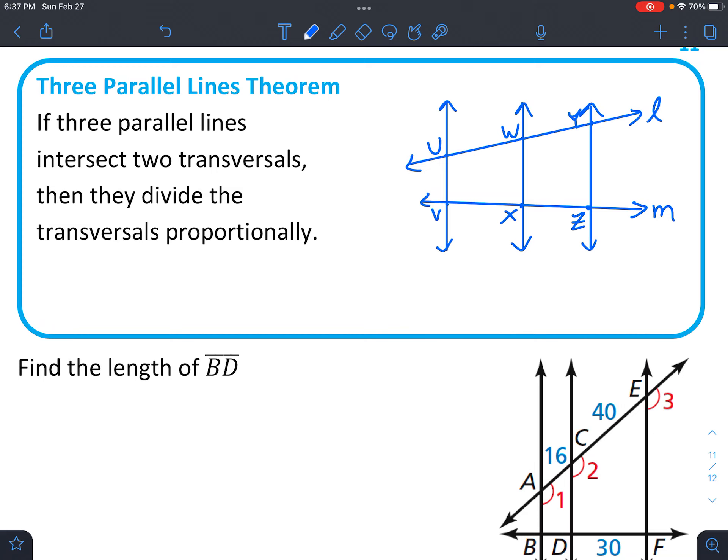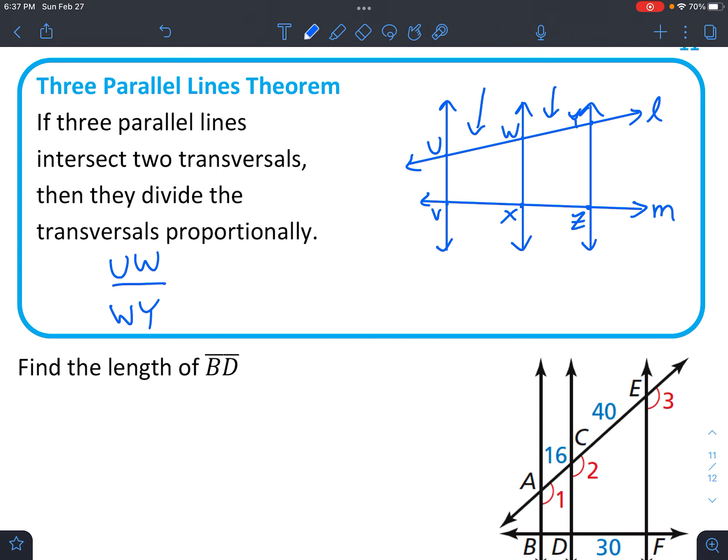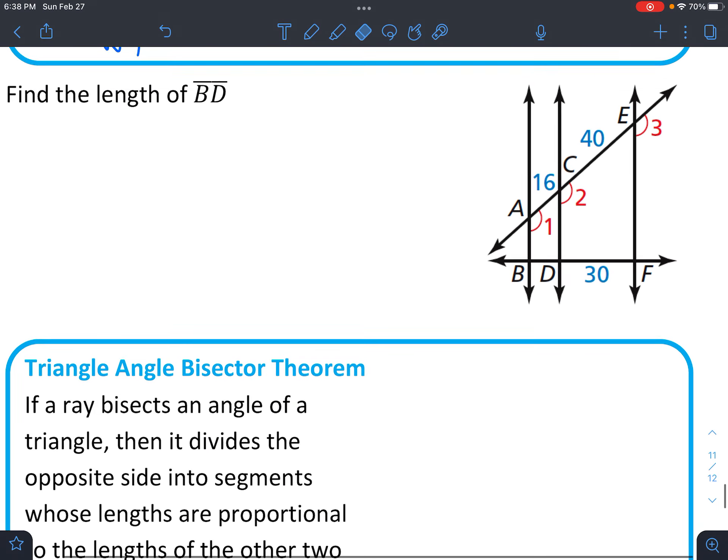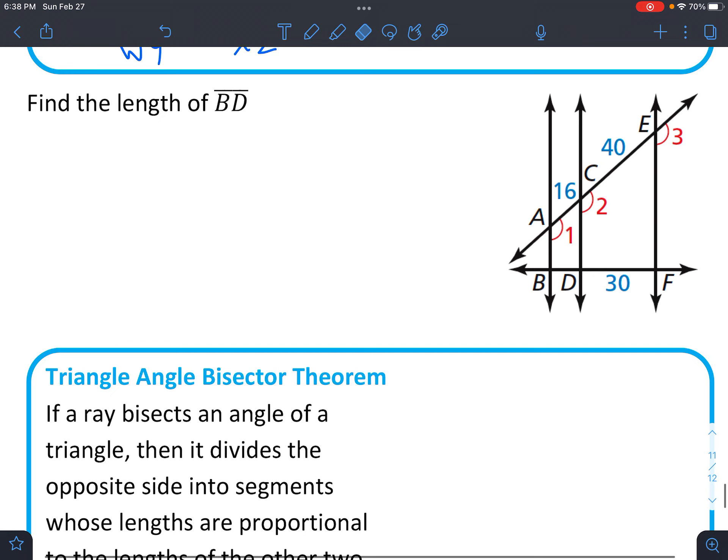Okay, it says if three parallel lines intersect two transversals, then they divide the transversals proportionally. So UW would compare to WY. So let's look at where those are. U, W would compare to W, Y, right next to it, the same way that V, X, compares to X, Z. Just realize my V's and U's kind of look alike, so I'm going to make that a little more defined. Okay. And so let's set this up. With the real numbers, it's a little easier to see.